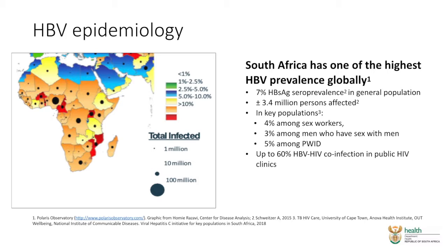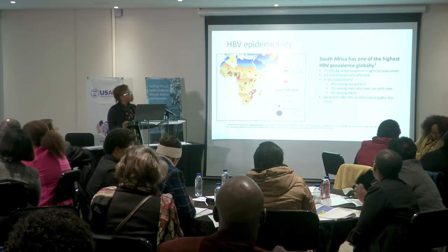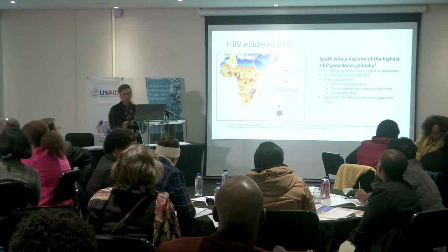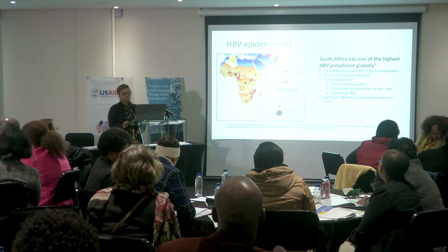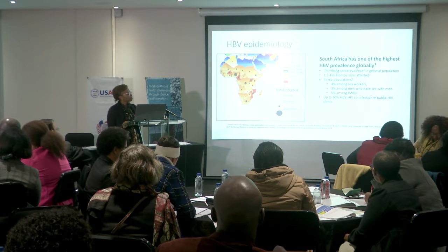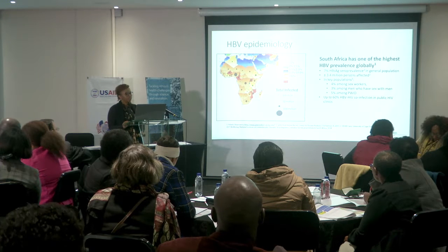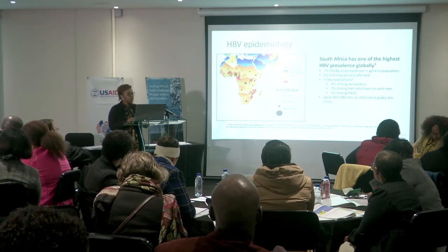The seroprevalence is 7% at this stage for surface antigen positivity in the general population, with around 3.4 million people affected. In key populations, 4% of those would be sex workers, 3% is found amongst men who have sex with men, and 5% of your intravenous drug users. Up to 60% of patients would be HIV and hepatitis B co-infected, and this has an impact on disease progression.